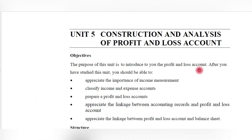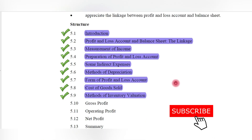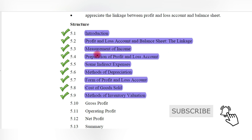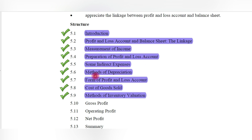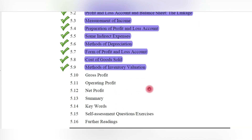This is Unit Number Five: Construction and Analysis of Profit and Loss Account. In the previous videos, we have already covered topics including the profit and loss account, linkage between profit and loss and balance sheet, how to measure income, how to prepare a profit and loss account, indirect expenses, methods of depreciation, form of profit and loss account, cost of goods sold, and methods of inventory valuation.